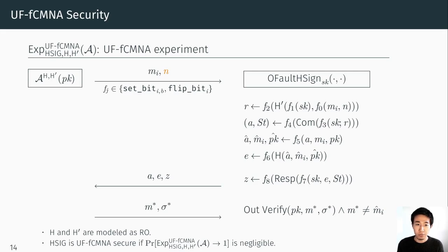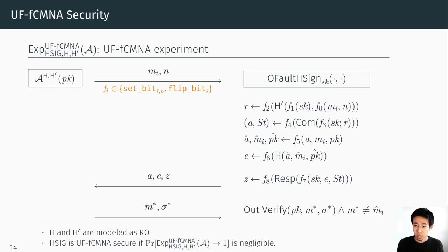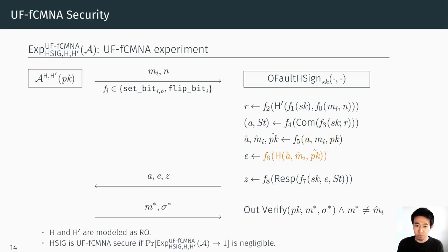Using these functions, the adversary queries a faulty signing oracle. The adversary is first allowed to choose a nonce, modeling some kind of randomness failure where the adversary can control the nonce N. On top of this, the adversary chooses a fault function and specifies the position at which to inject the fault — for instance, to model the special soundness attack, the adversary may inject the fault into the challenge hash input, or into the output of the hash function. We say the scheme is UF-FCM secure if the adversary's advantage in this experiment is negligible.